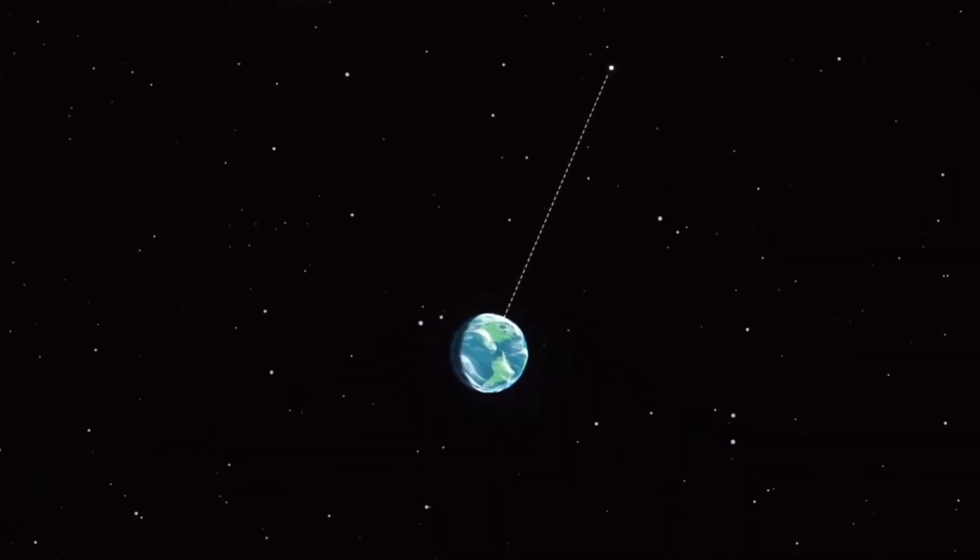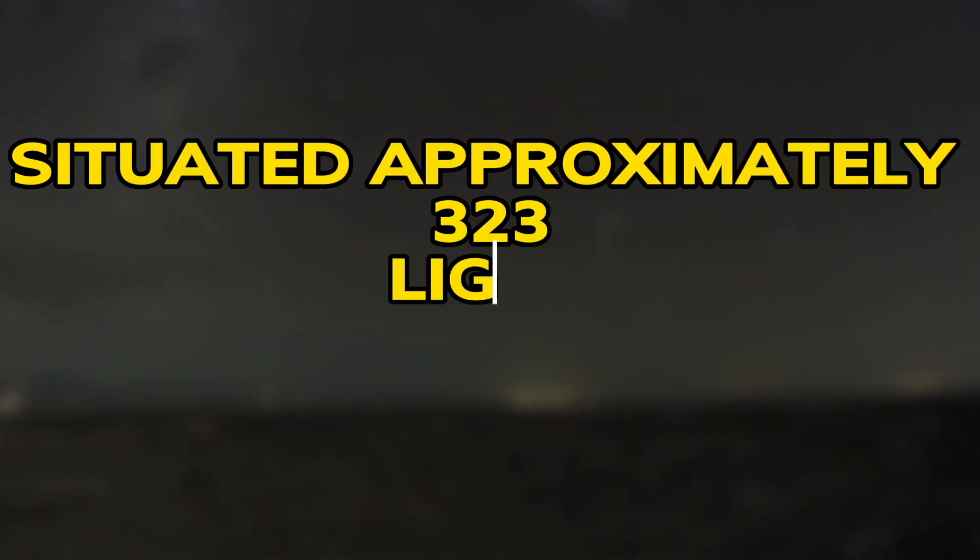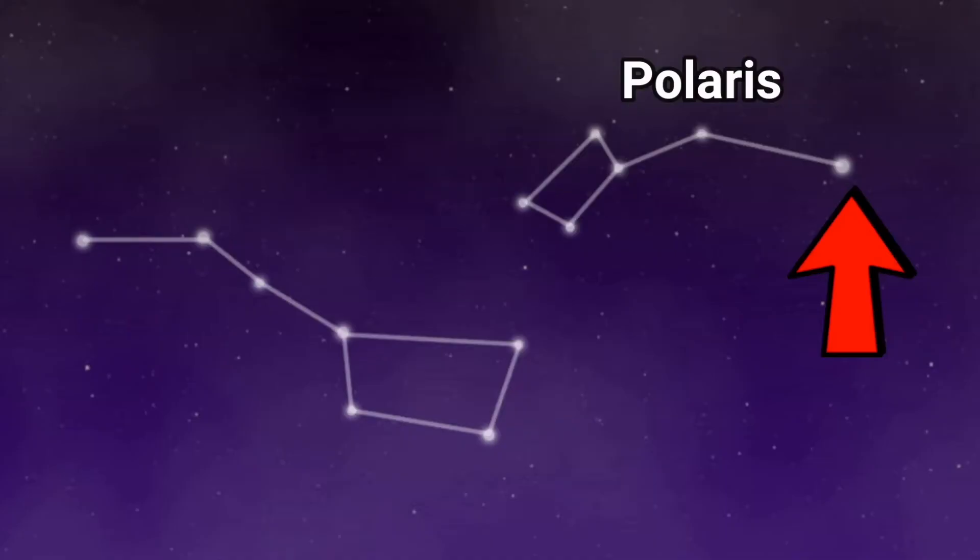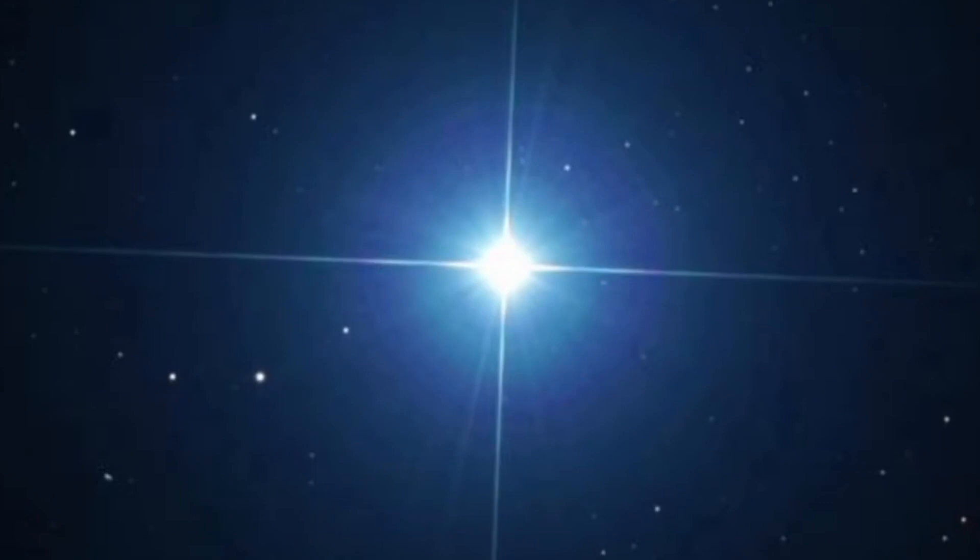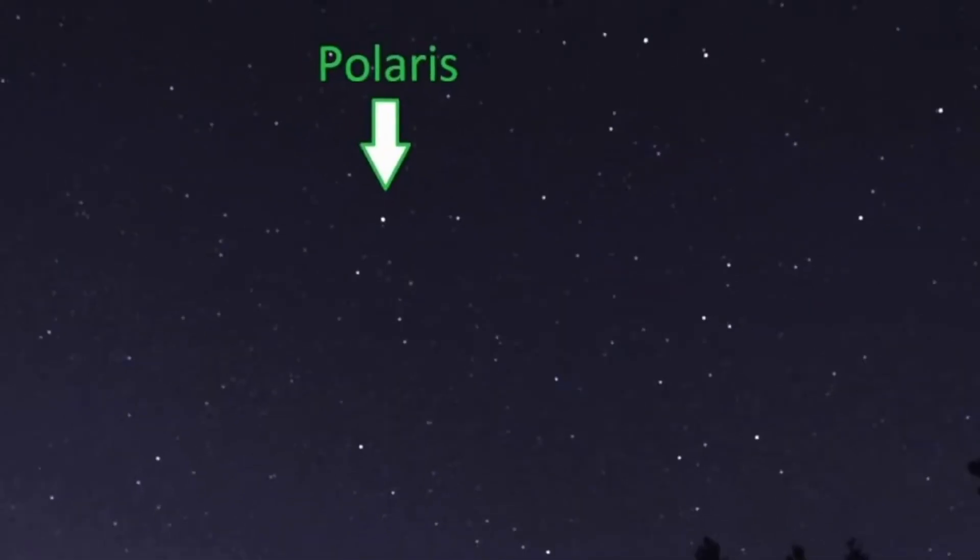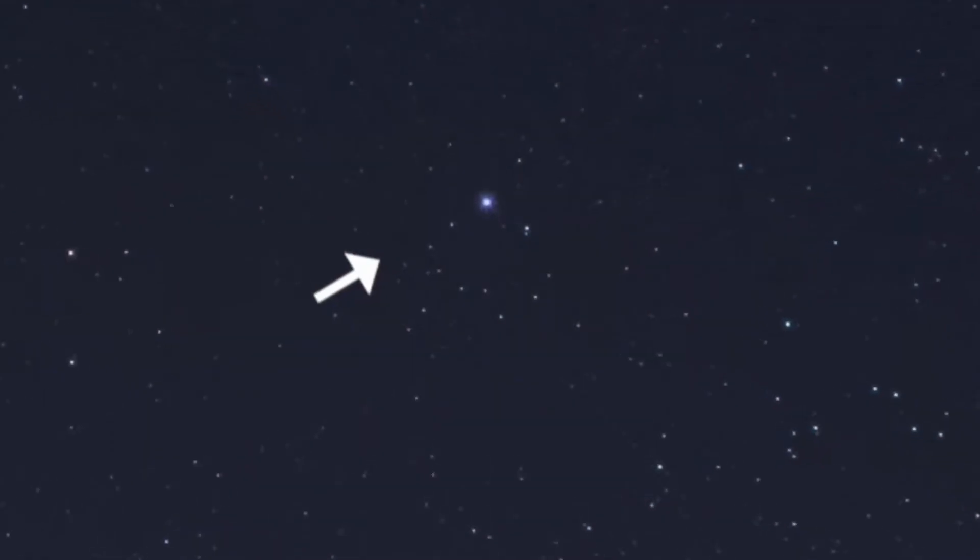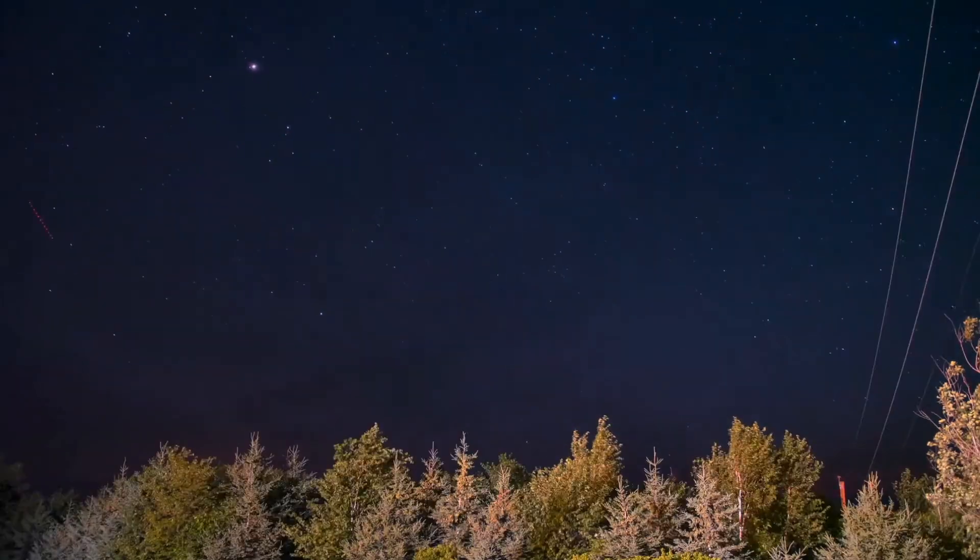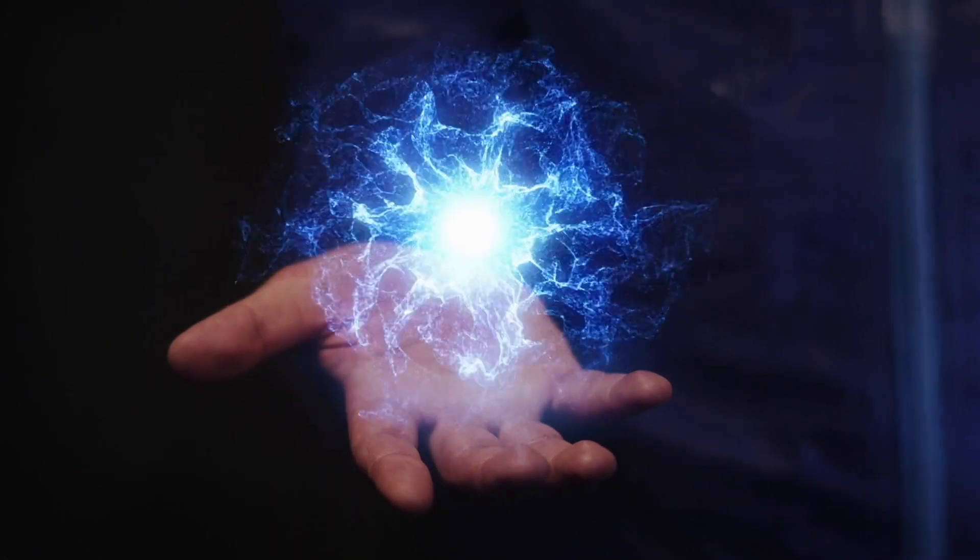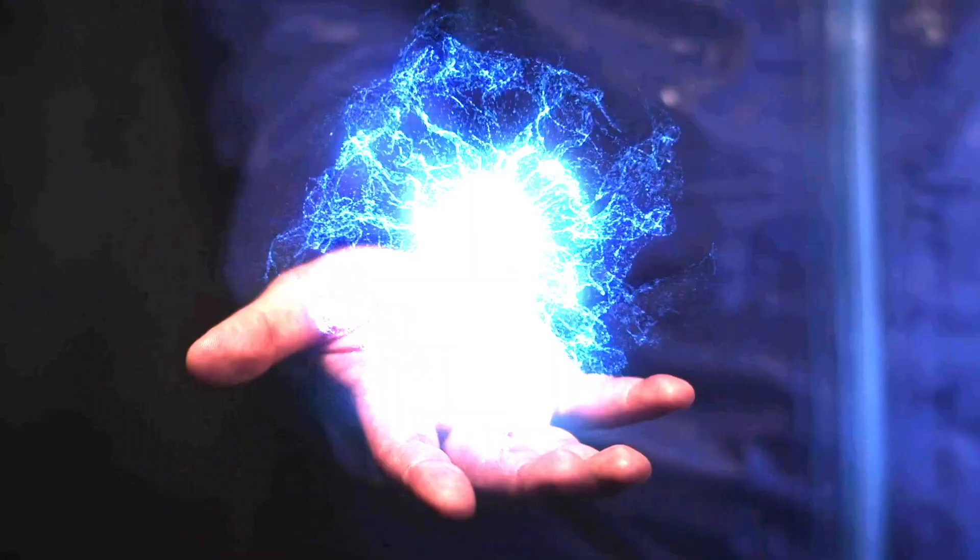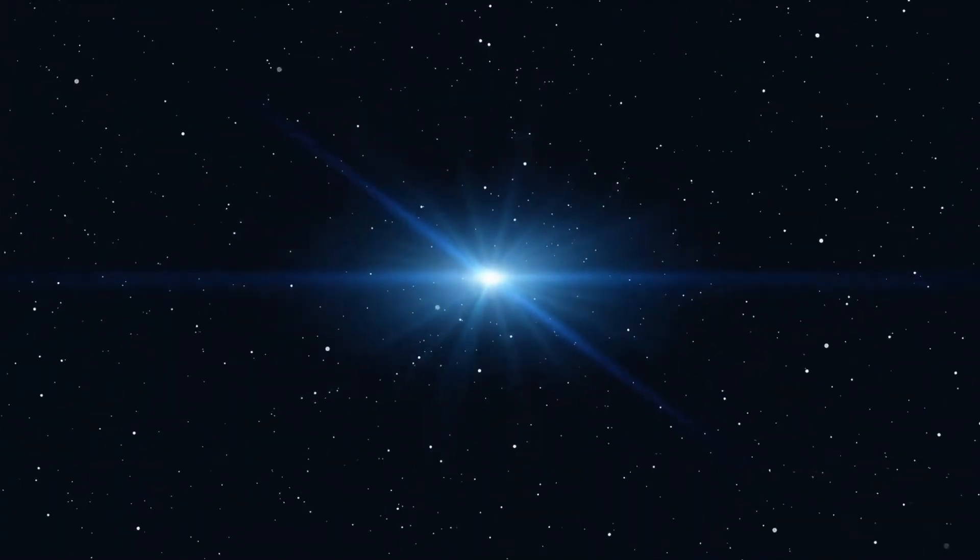One important aspect to consider is the distance between Polaris and Earth. Situated approximately 323 light-years away, the light from Polaris takes about 323 years to reach us. This means that the light we currently see from Polaris is as it was 323 years ago. If Polaris were to explode today, we wouldn't know about it until 323 years from now. This temporal delay adds an intriguing element of time to our understanding of the star's potential fate.